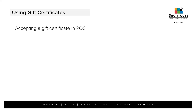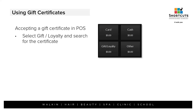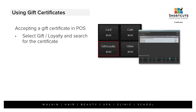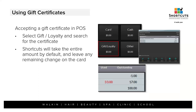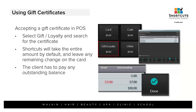When the customer returns, in the point of sale you're going to select the Gift/Loyalty button. In version 8.1 of Shortcuts — also known as Shortcuts 2021 — when you select it, you're able to select gift certificates and search. You can scan in the barcode or manually search for it, or Shortcuts will give you a list of every gift certificate you sold and what the value is. Once you find it, Shortcuts will deduct whatever the value of that gift certificate was. If there's a remaining balance, it stays on that gift certificate. But if it was less than the value of the service, Shortcuts will deduct the entire amount off of that card.